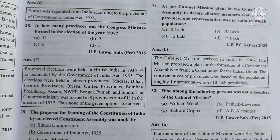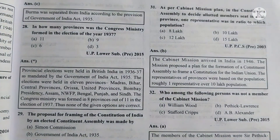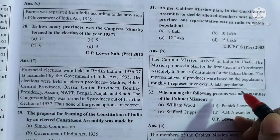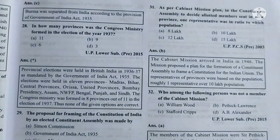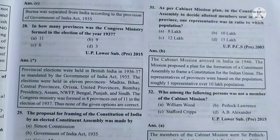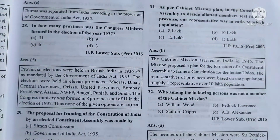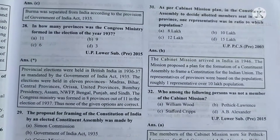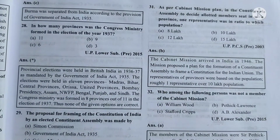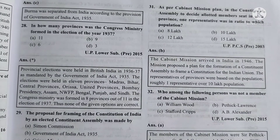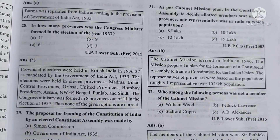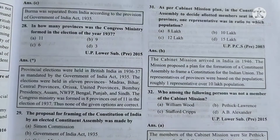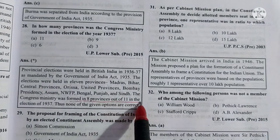In the last video, some questions on the basic structure of the constitution were shown. Now continuing from question number 28: in how many provinces was the Congress ministry formed in the election of 1937? The answer is disputed — no clear single answer is given — but according to the explanation, the main answer is 8 out of 11 provinces.